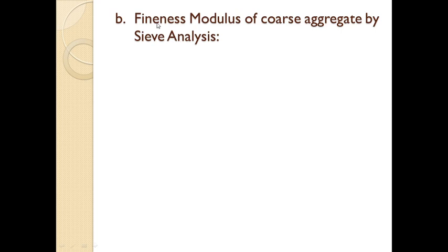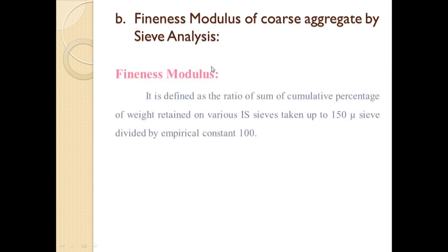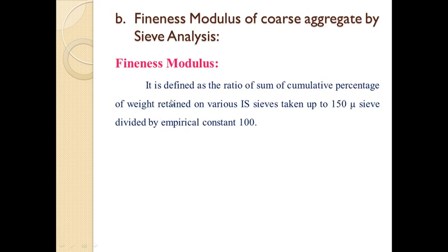Now in this lecture we are going to discuss second properties, that is fineness modulus of coarse aggregate by sieve analysis. So let us see what is meant by fineness modulus. Fineness modulus is defined as the ratio of sum of cumulative percentage of weight retained on various IS sieves taken up to 150 micron sieve divided by the empirical constant 100.